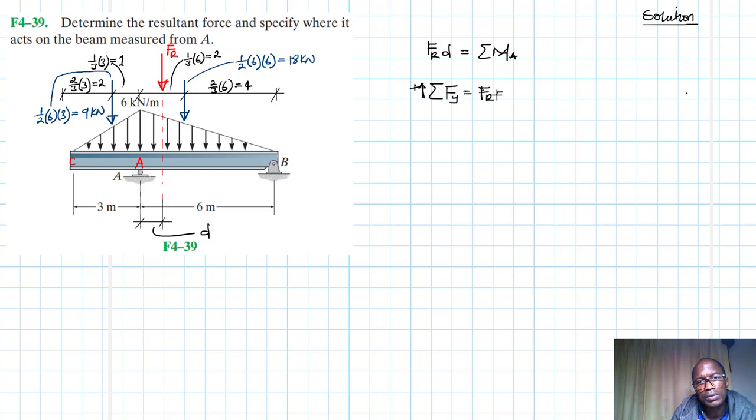Which is equal to minus 9 minus 18, this therefore is going to be equal to minus 27 kilonewtons, which is also just equal to 27 kilonewtons going down like that.